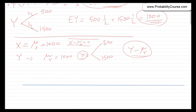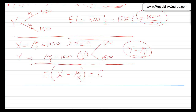To address this issue, for any random variable x we can look at x minus mu_x and see how it changes. We could look at the expected value of this quantity. Using linearity of expectation: E[x − μ_x] = E[x] − E[μ_x]. Since E[x] = μ_x and μ_x is a constant, this equals μ_x − μ_x = 0.